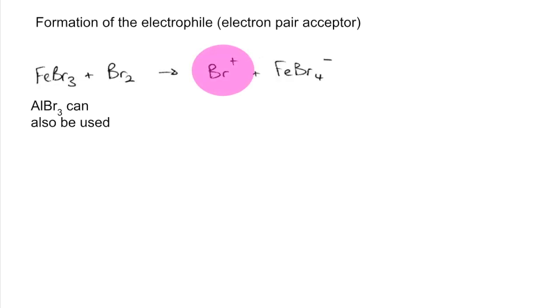First step: formation of the electrophile, the electron pair acceptor. I'm using FeBr3 but you can also use AlBr3. The important ion is the Br+ ion.